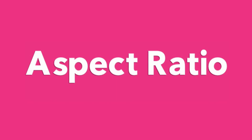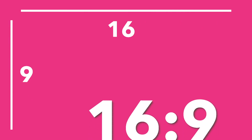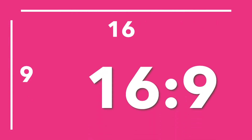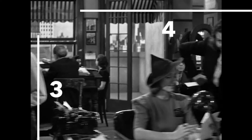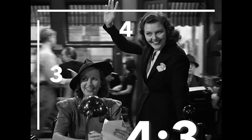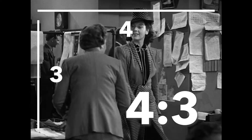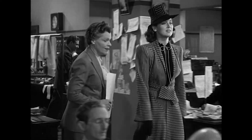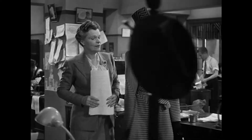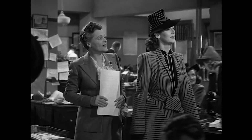Aspect ratio is the shape of the video. It can be found by dividing the width and the height of the image. For example, this video is 16 by 9. Old Hollywood films used to be shot in 4 by 3. Notice how there are black bars on both sides of the video.